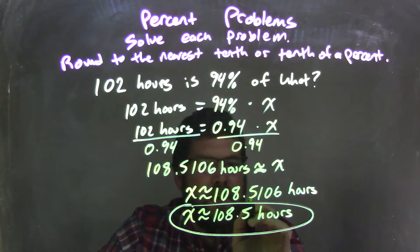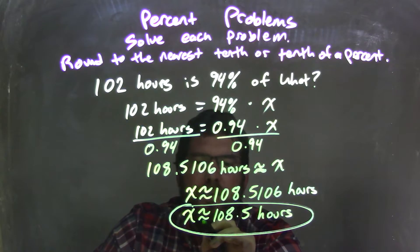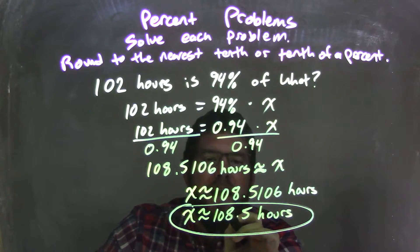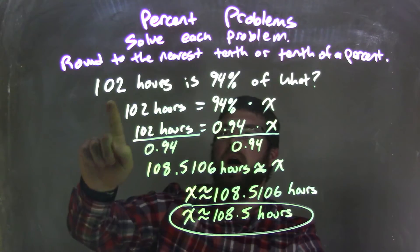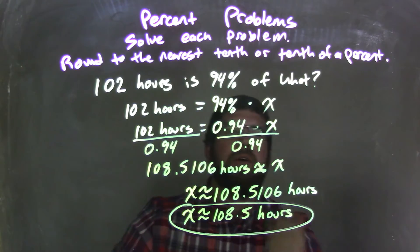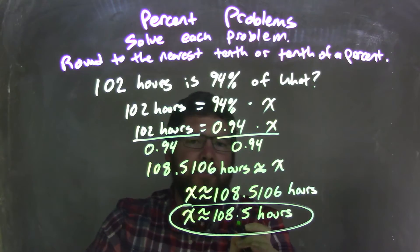So the 1 and the 5. The 1 causes the 5 to round down. So I'm left with X is approximately equal to 108.5 hours, which answers our question. 102 hours is 94% of 108.5 hours.